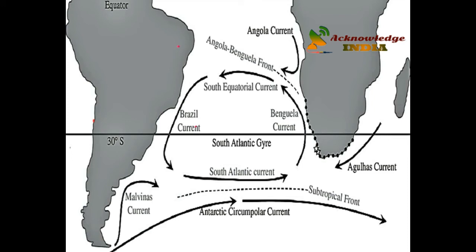To the south of the high pressure area of the South Atlantic, the Brazilian Current flows to the east and becomes the South Atlantic Current, which turns towards the African coast as the Benguela Current. The Benguela Current is more pronounced than its northern counterpart, the Canaries Current, and is characterized by lower temperatures near the coast.